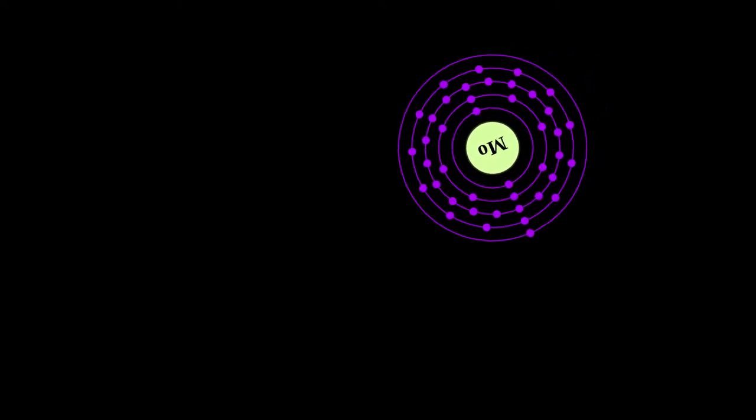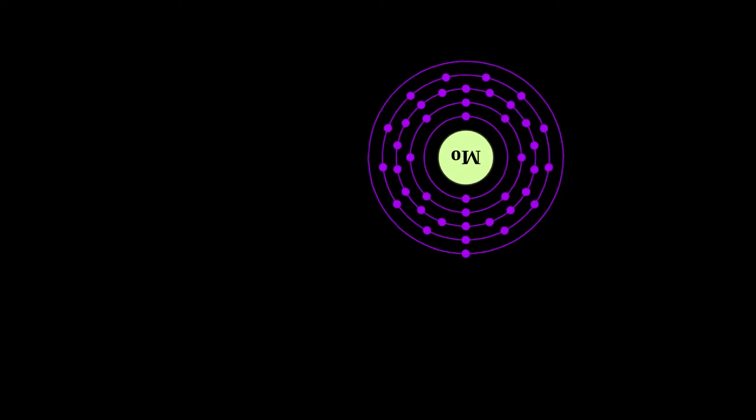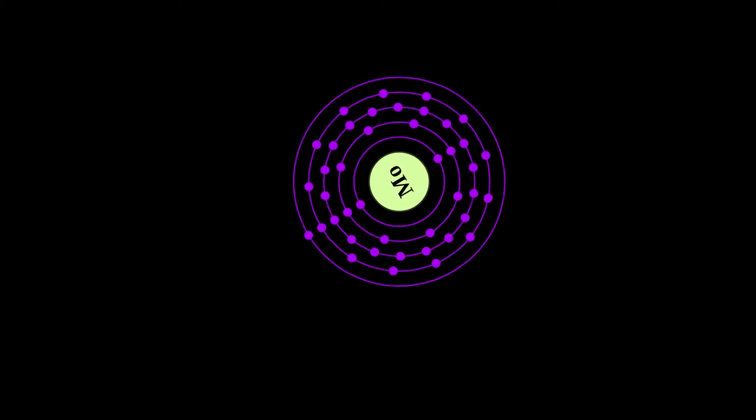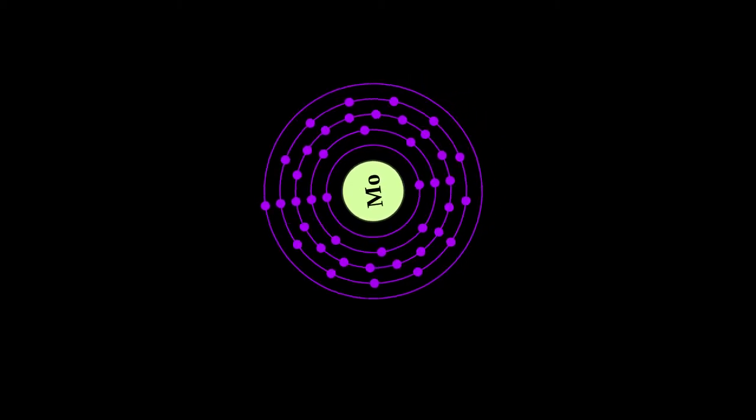It readily forms hard, stable carbides and alloys, and for this reason most of world production of the element, about 80%, is used in steel alloys, including high-strength alloys and superalloys.